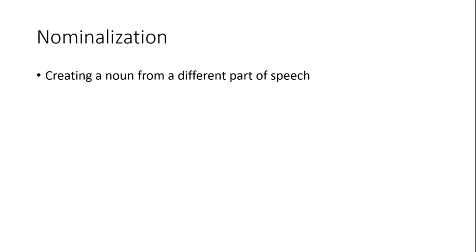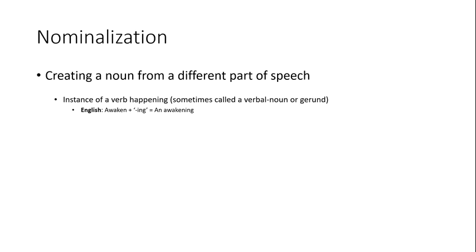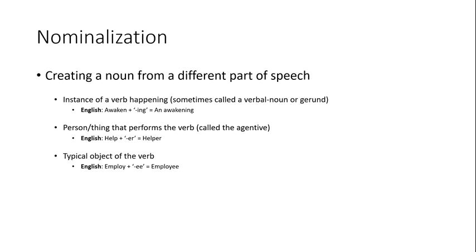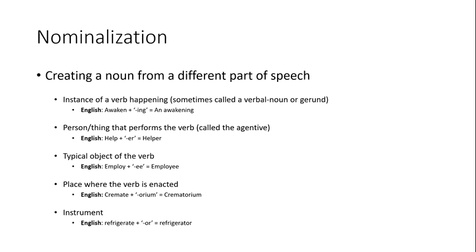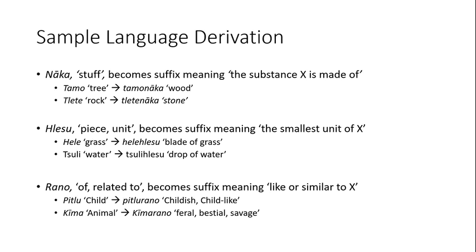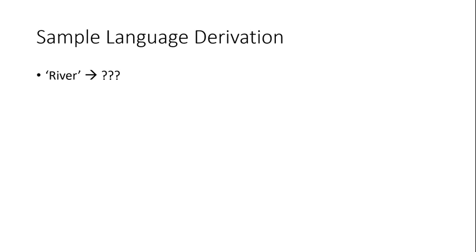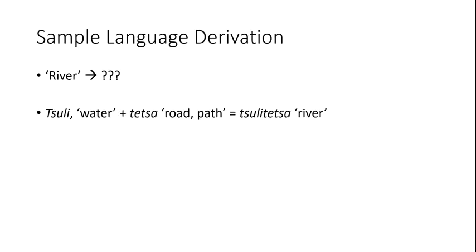It's very common for a language to have nominalizing affixes that encode the meanings: an instance of the verb happening, the person who customarily performs the verb, the typical object of the verb, the place where the verb happens, and the tool used to accomplish the verb. But feel free to get creative and include any other possibilities you can think of. Processes like these are indispensable when creating new vocabulary. Every time you go to create a new word, always ask yourself if you can find a way to derive it from another already existing word first. If all else fails, you can create a new root for it.